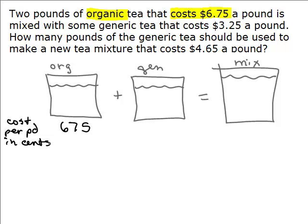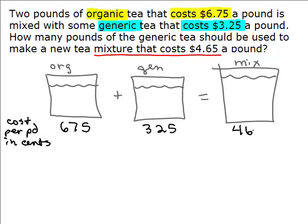Now, what about the generic tea? It costs $3.25 a pound, so that would be 325 cents per pound. Since we're mixing expensive tea with cheaper tea, it makes sense that the mixture is going to be some amount in the middle. And in fact it is — our mixture costs $4.65 a pound, which I'll put in as 465 cents per pound.